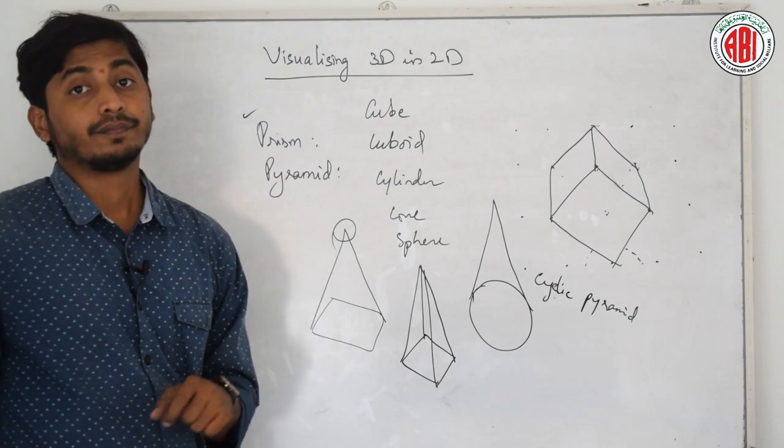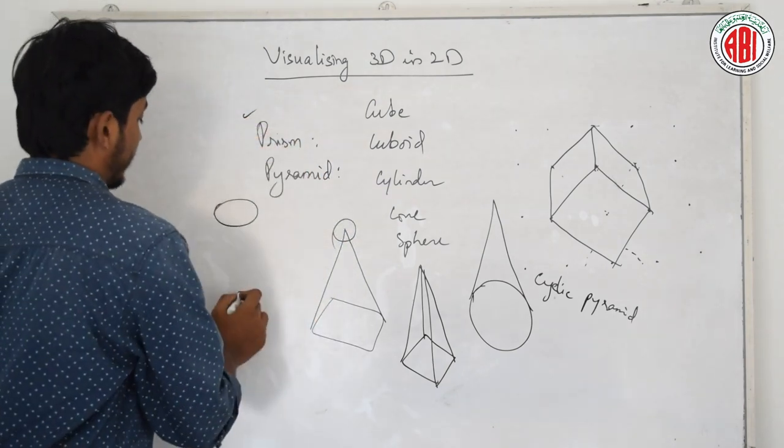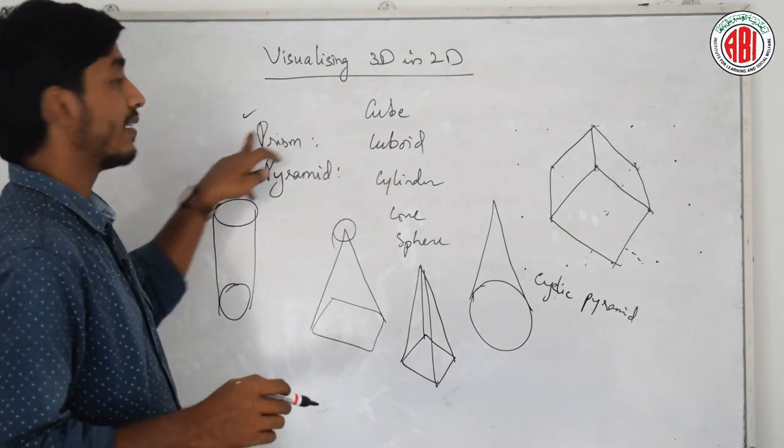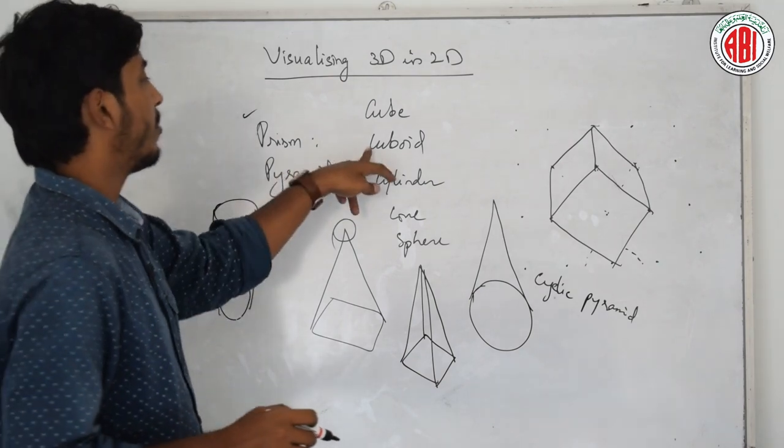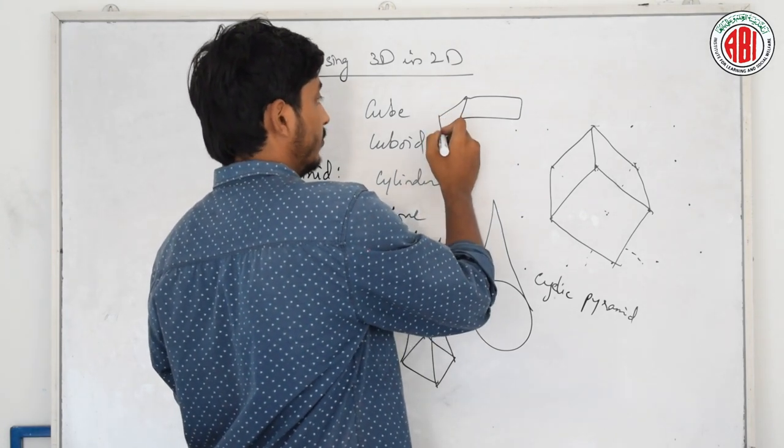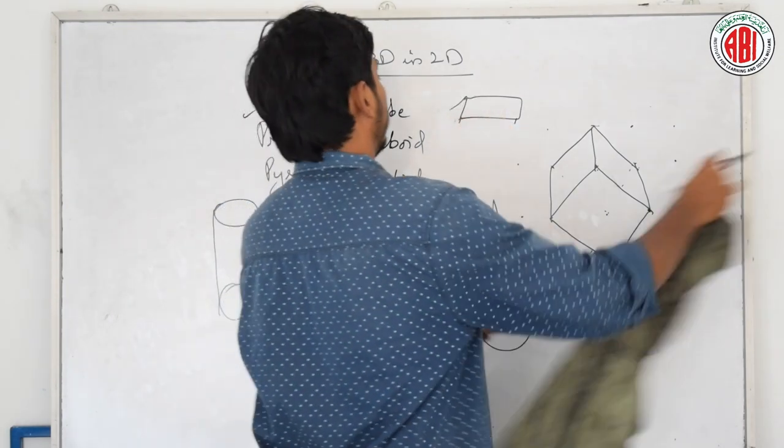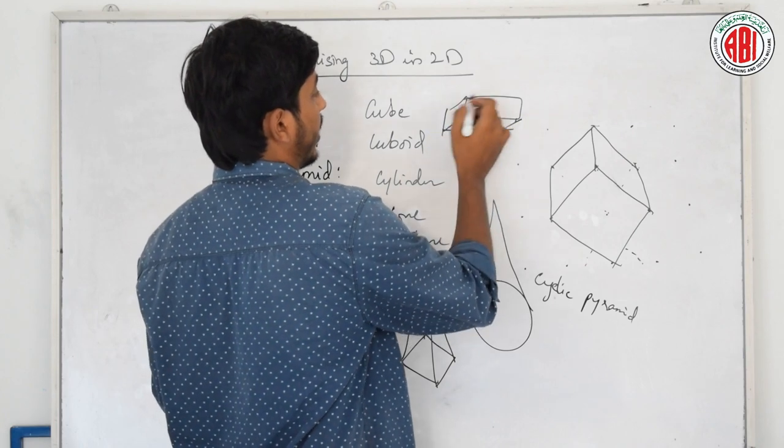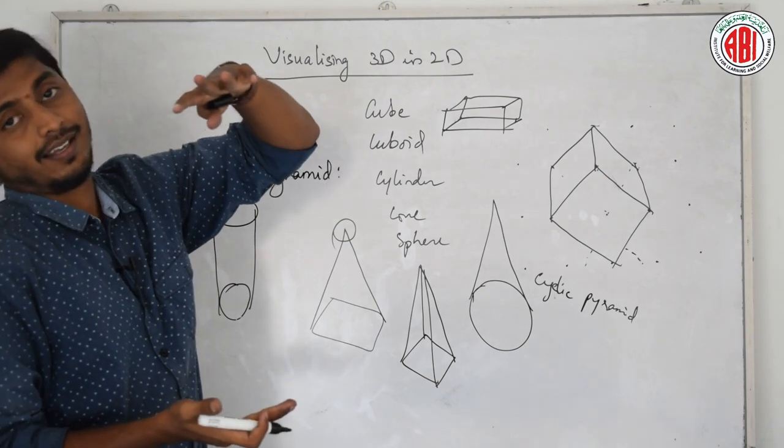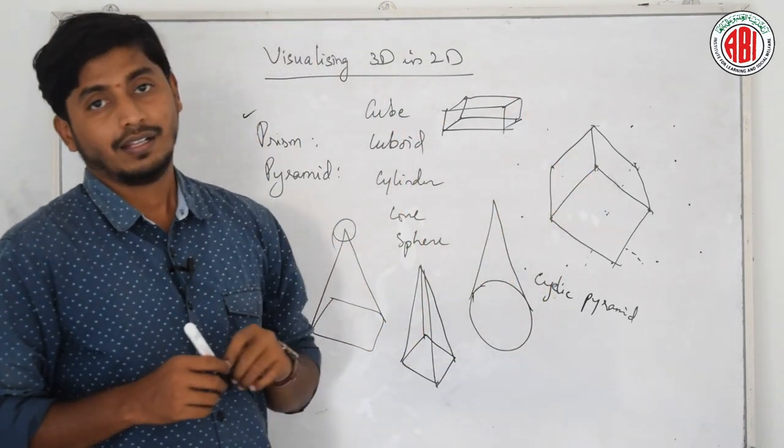What about prism? Prism is on the bottom and the top, both are of same shape. For example, here circle, here circle. This is nothing but cylinder. Cylinder can be called as circular prism. What about cuboid? Can I call cuboid as a rectangular prism? Because the bottom is also a rectangle, top is also a rectangle.